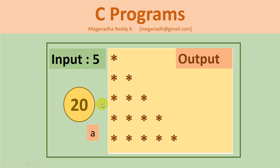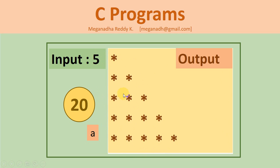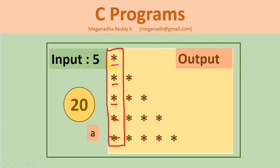Let's go back and analyze the pattern. We're reading value n, so we need to print 1, 2, 3, 4, 5 rows using a for loop. Let's first assume the inner stars are not there — just focus on printing one star per row. In this simplified case, we write a for loop to print the stars, then we'll add the inner loop.